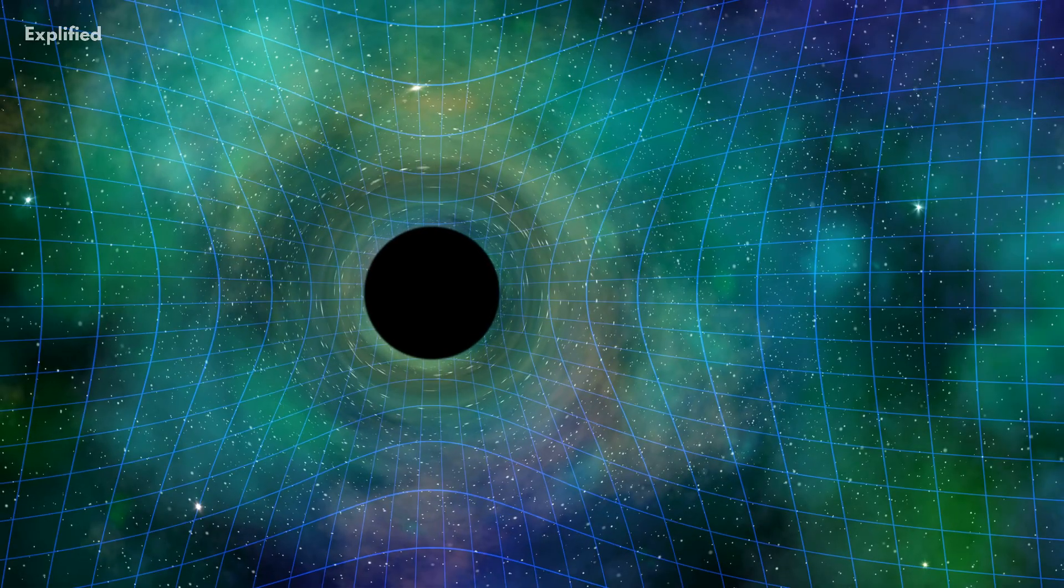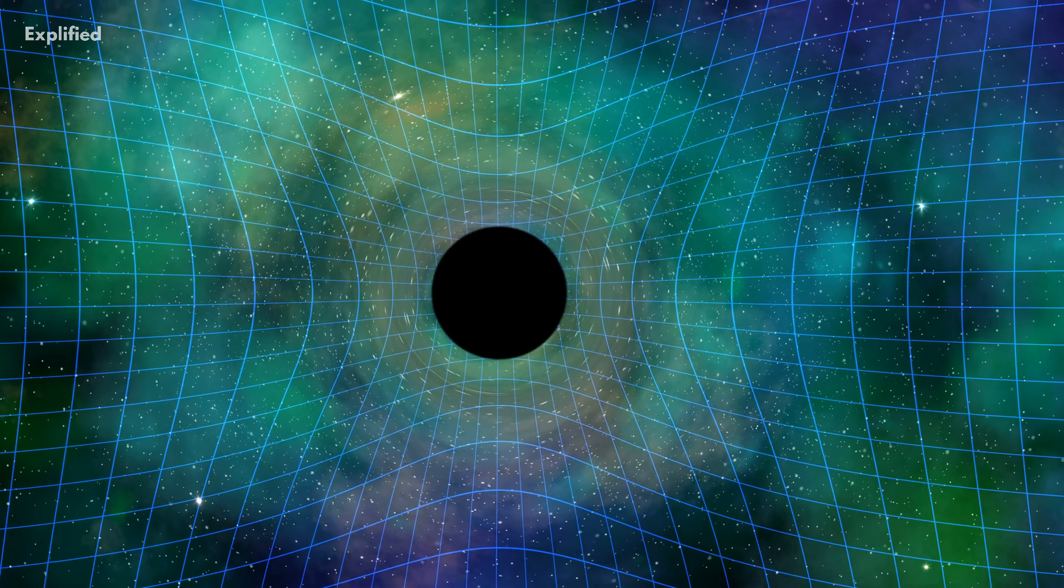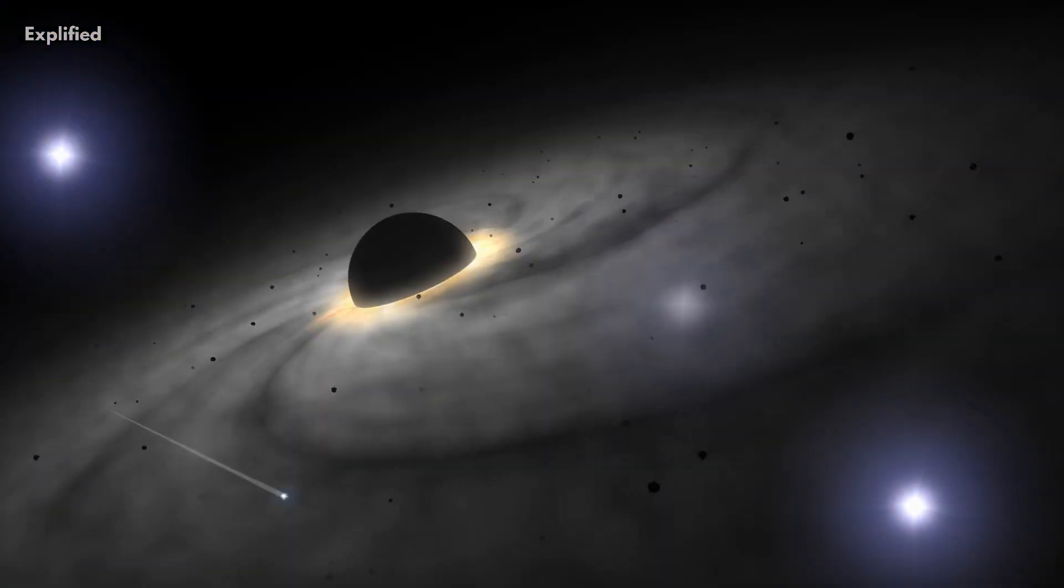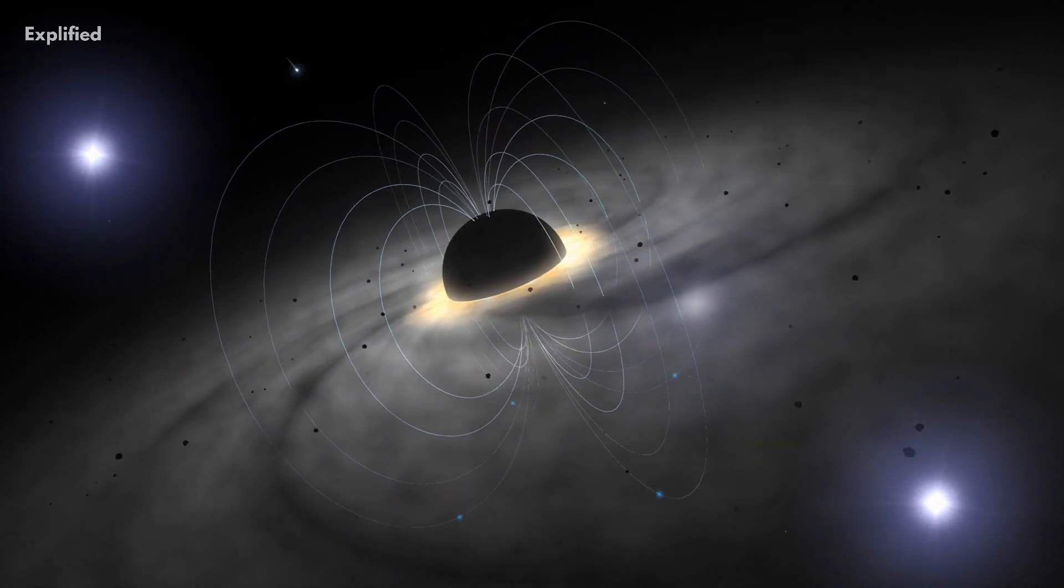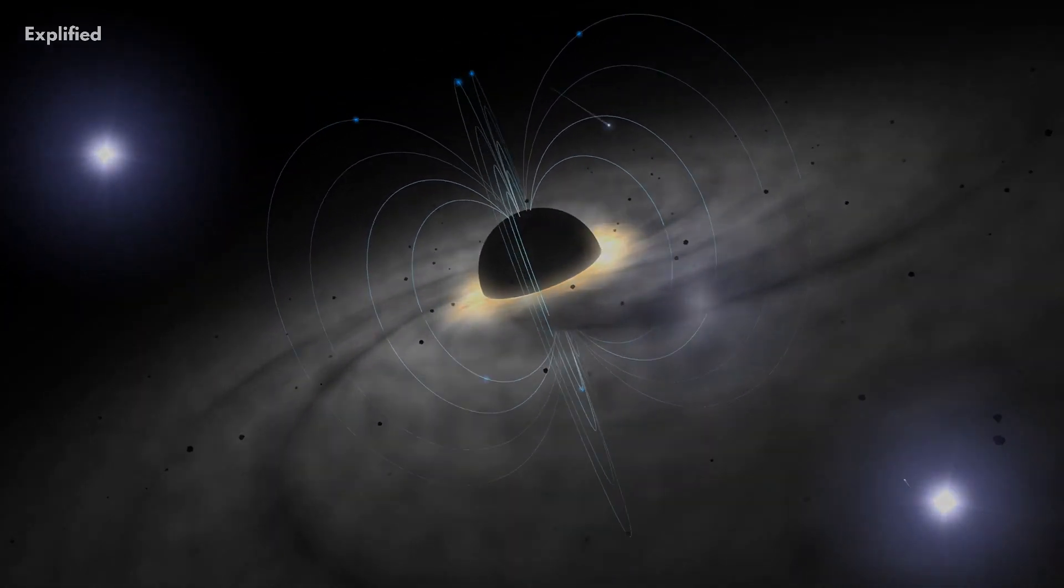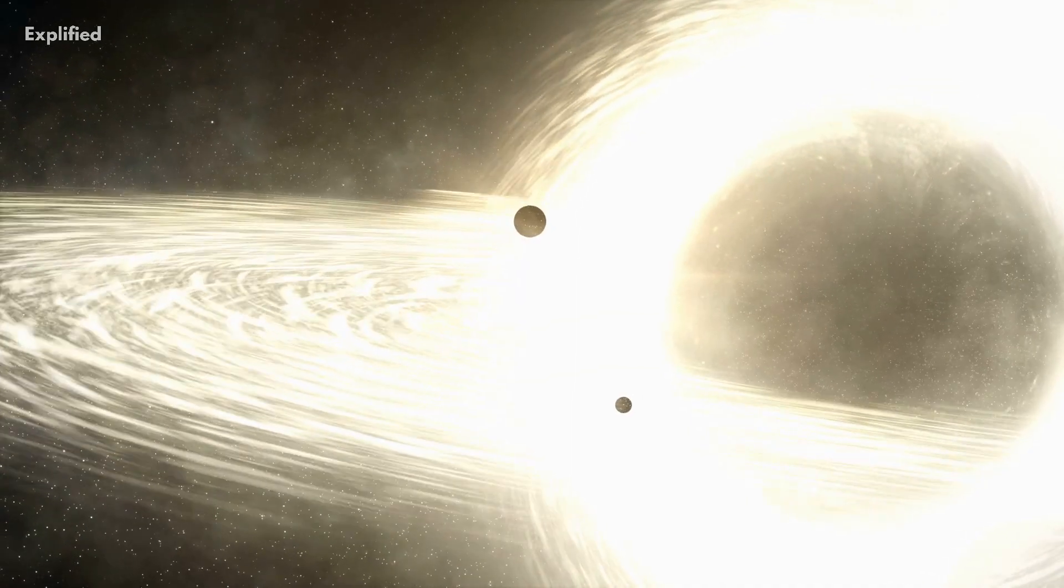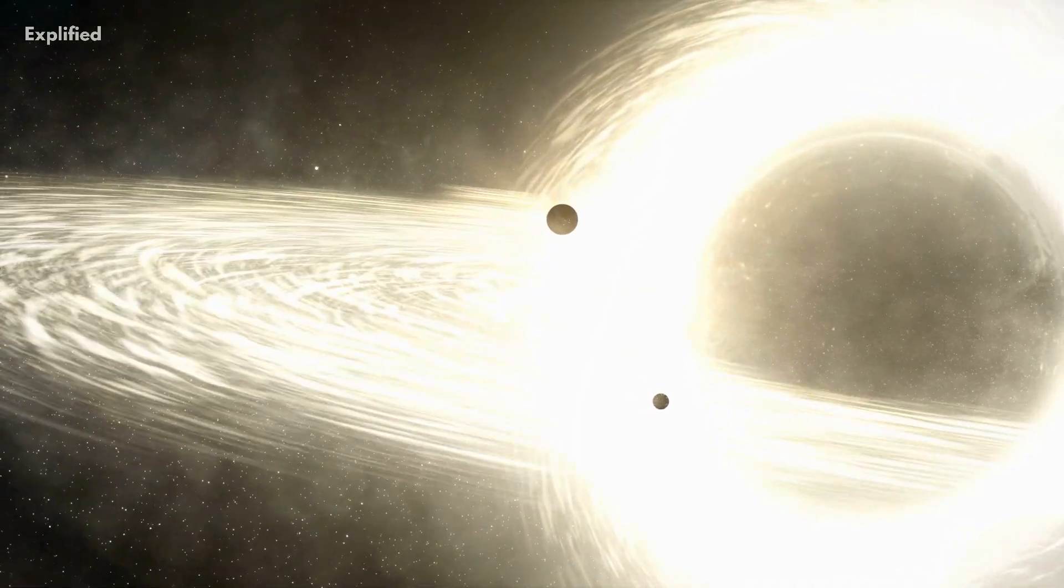However, there are some indications that quantum gravity could be a real thing. For example, the behavior of black holes seems to suggest that quantum mechanics and general relativity are both at play. The Hawking radiation that is emitted by black holes could be evidence of this.